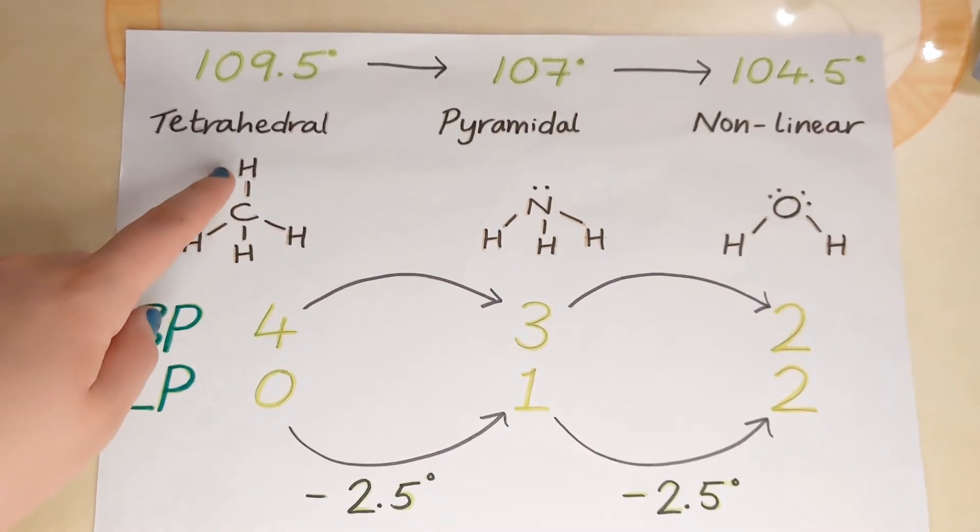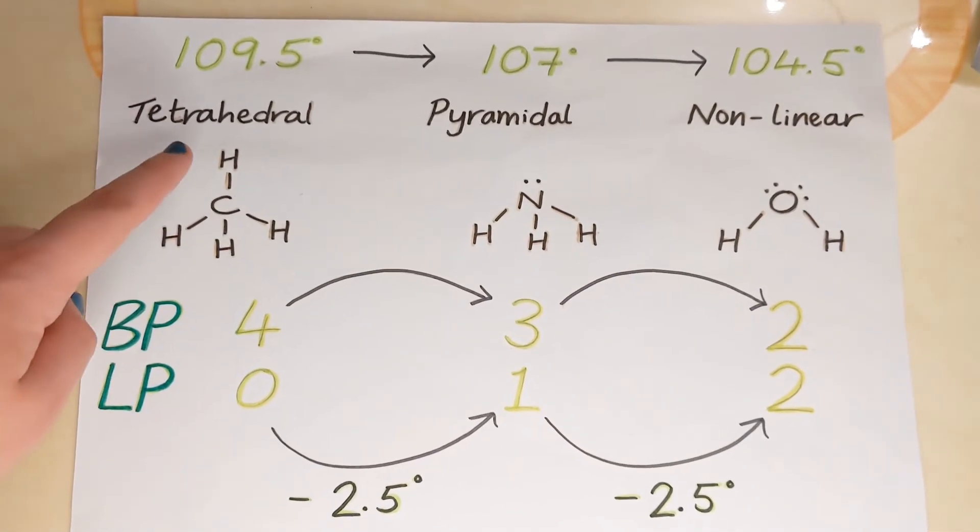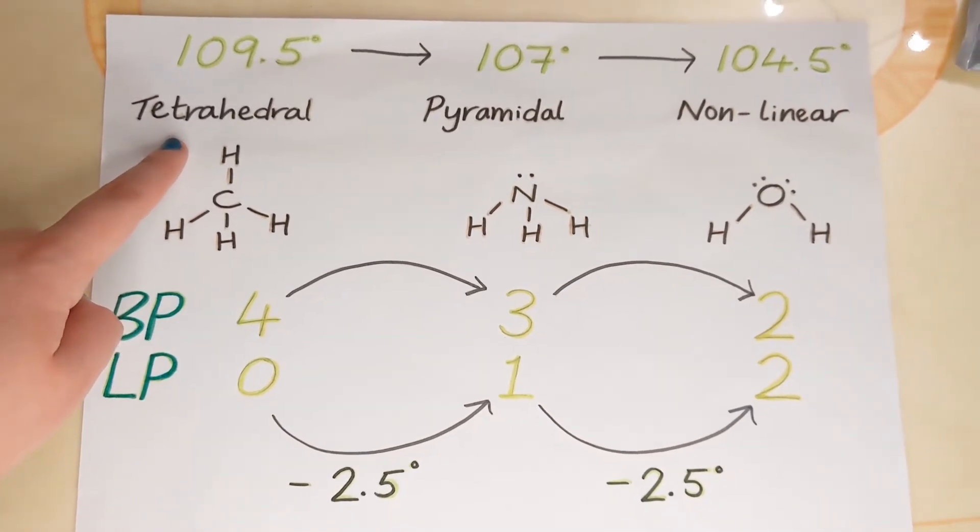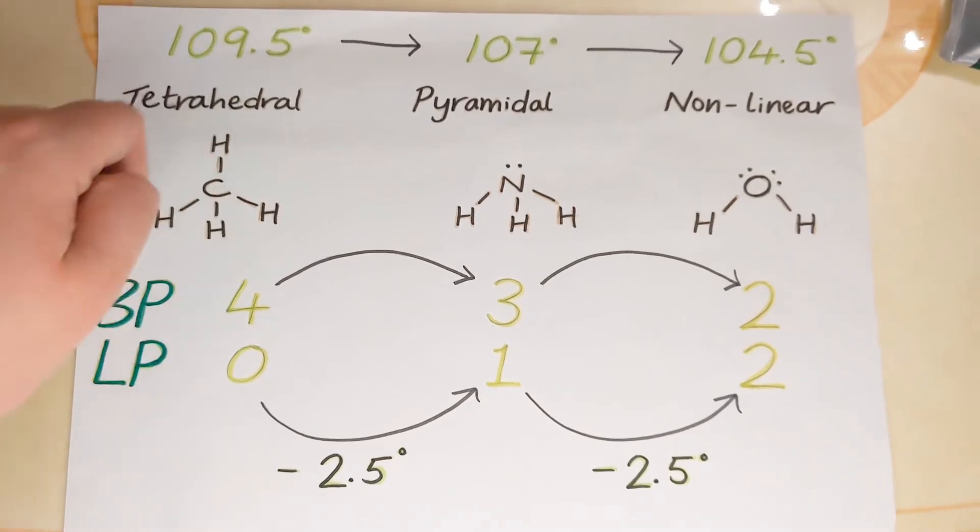So if we look at this molecule, it has four bonding pairs, zero lone pairs. It's tetrahedral and the bond angle for a tetrahedral molecule is 109.5 degrees.